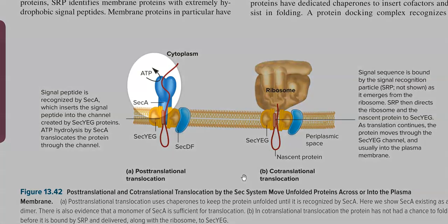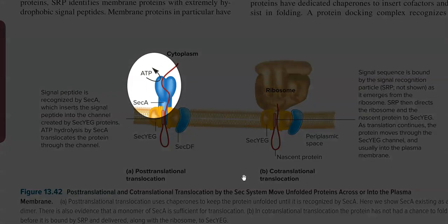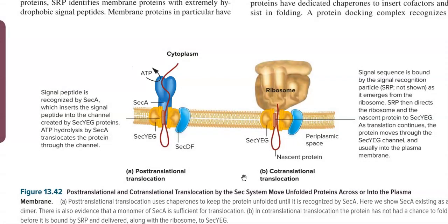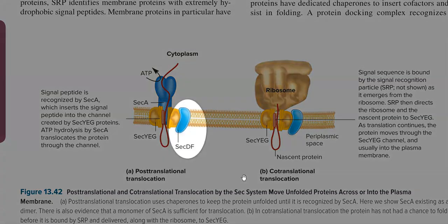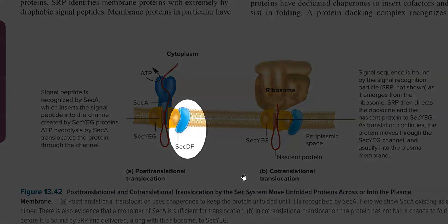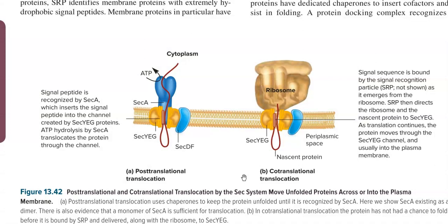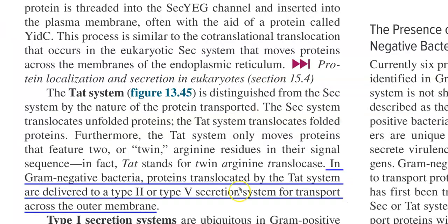The role of SecA protein is hydrolyzing ATP, which provides energy for the translocation of protein through the channel. The role of SecDF is providing energy in the form of a proton gradient, which fuels the translocation of protein into the channel.